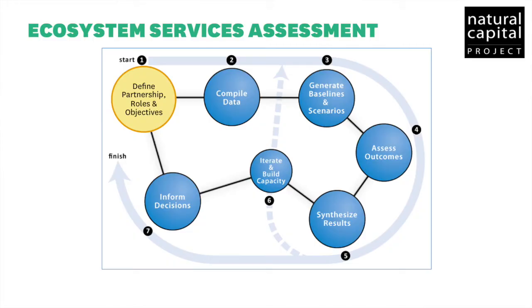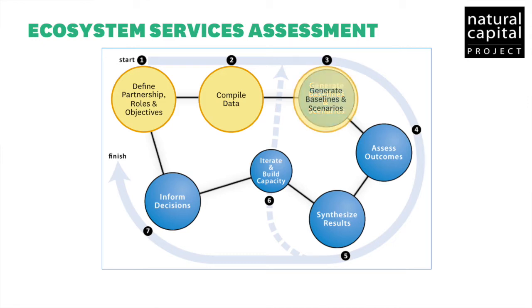Our experience has shown that InVEST studies are most effective when they are part of an iterative science-policy process. This process includes common elements seen repeatedly in our applications. First, it's important to scope out the problem to define partnerships and goals. Next, compile data on ecosystem services of interest. The next step is to develop a baseline understanding of ecosystem services on the current landscape and to develop scenarios of policy or land management changes that could affect future flows of ecosystem services.